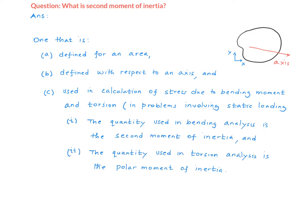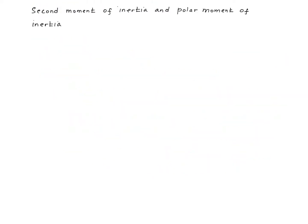The quantity that appears in the bending analysis is called the second moment of inertia, and the one that appears in the torsion analysis is called the polar moment of inertia. Now let's talk about the basics of these quantities.